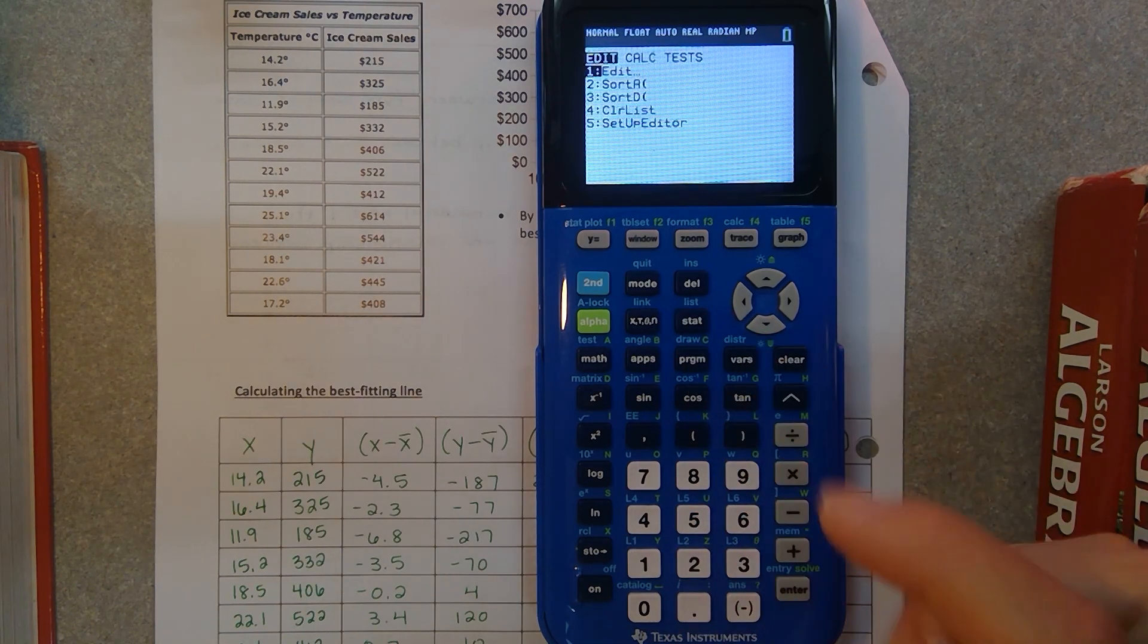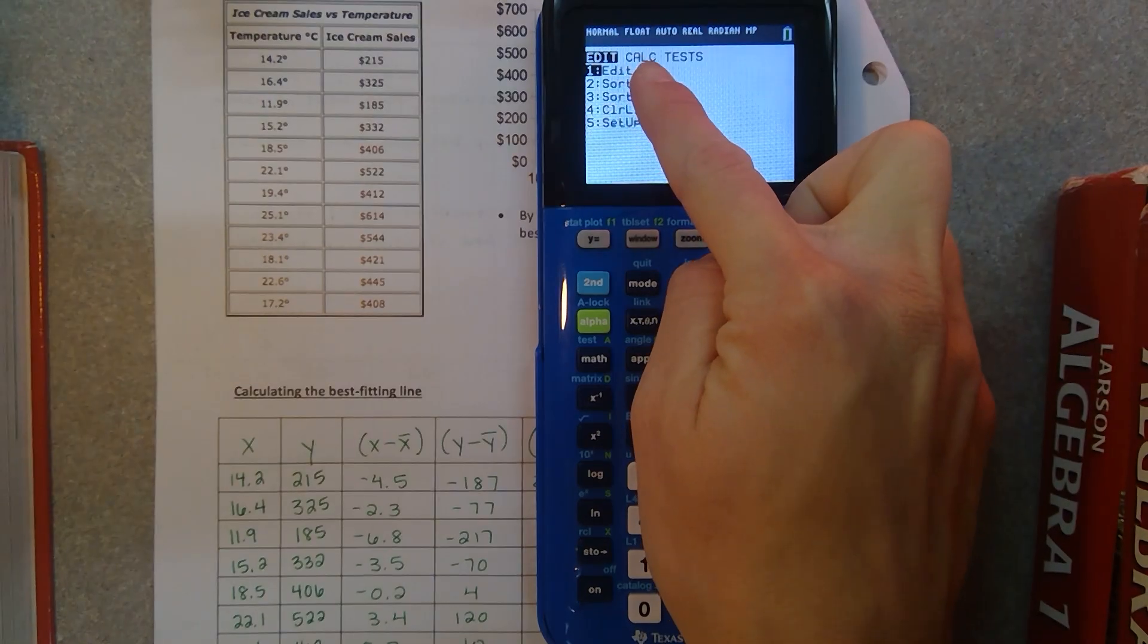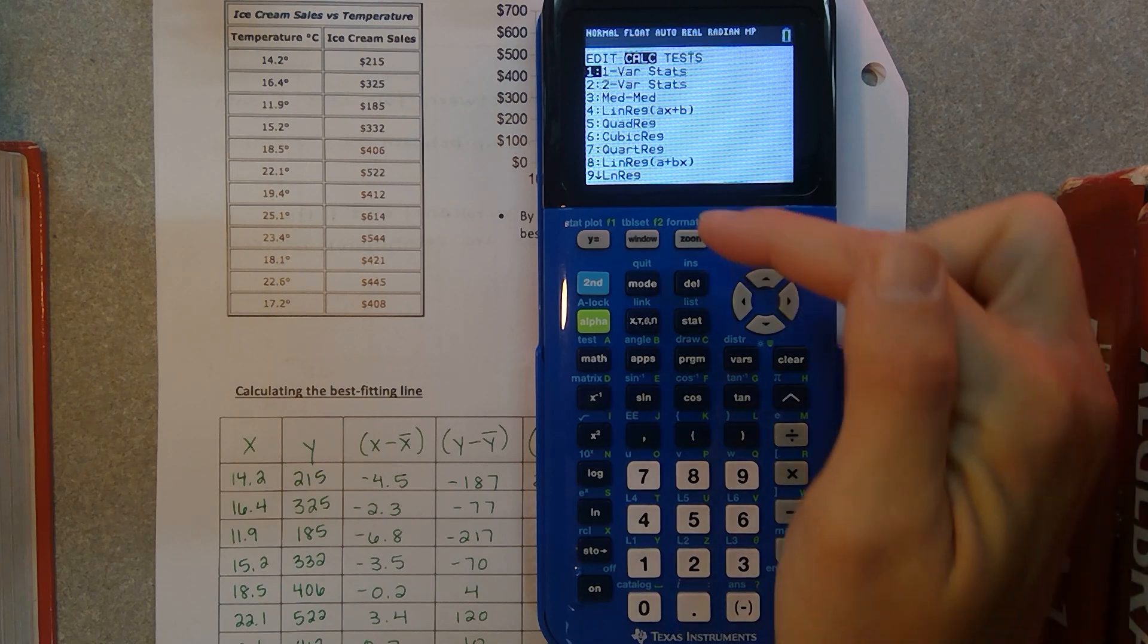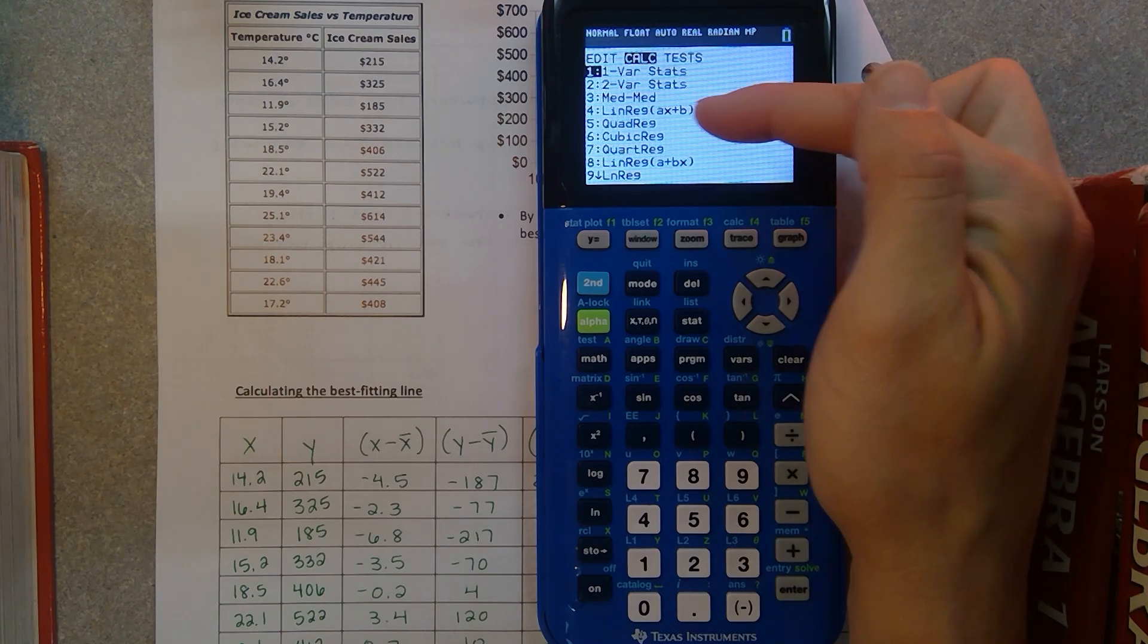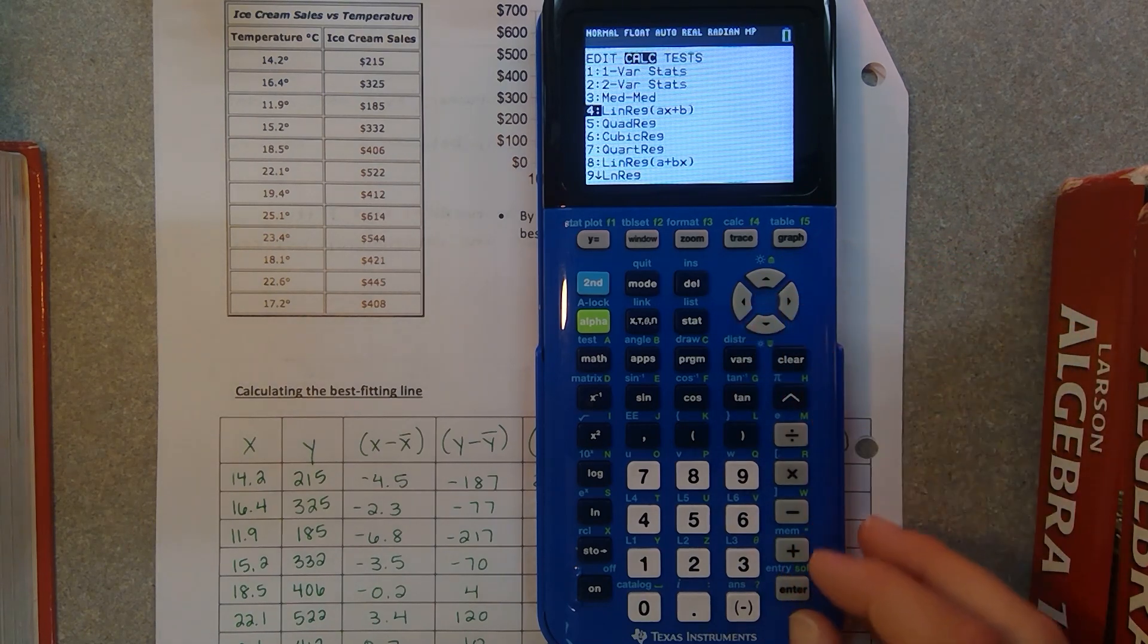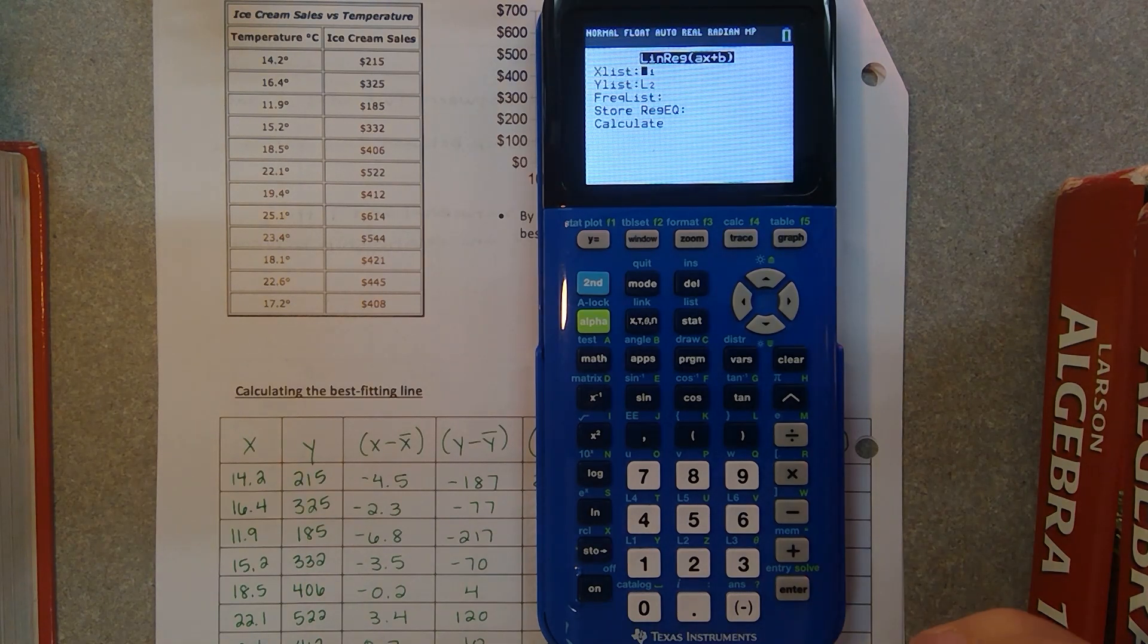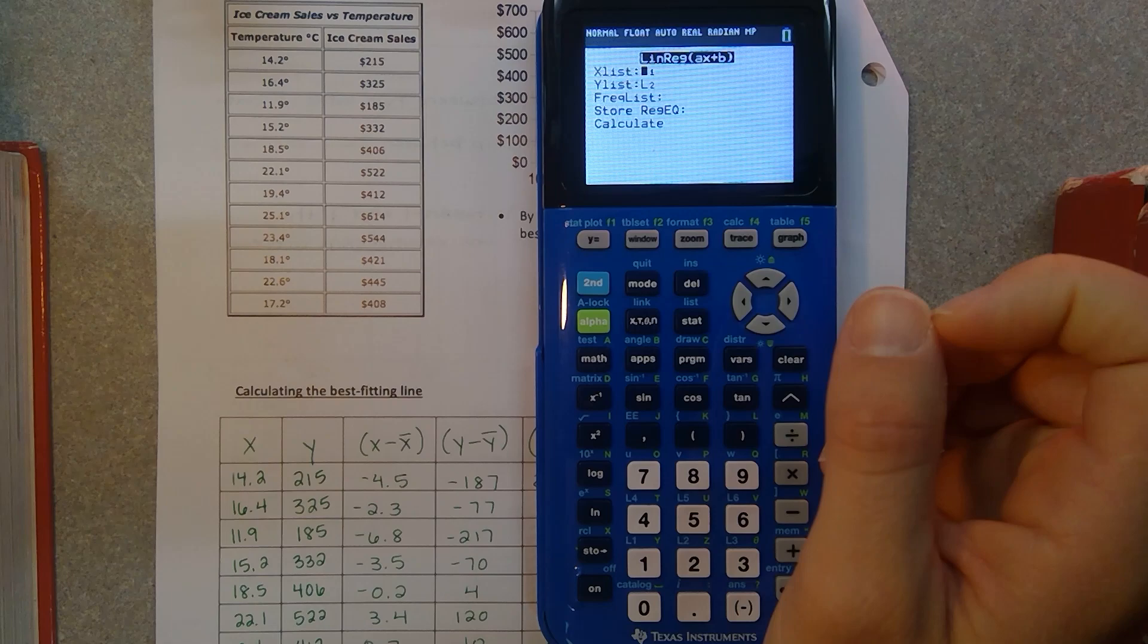If you hit the stat button again, this time we want to go over to the calculate option. So we're going to hit the right arrow button to calculate. And then it gives you this nice long menu of really confusing things. But number 4 should look kind of familiar here. Linreg, and then AX plus B. That's linear regression. And then this is like your Y equals MX plus B. So if you scroll down to number 4 or just hit the number 4. If your calculator is newer, it will give you this option. I'll show you what it looks like on an older calculator later on in the video.